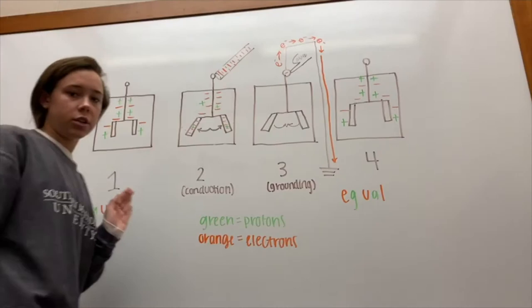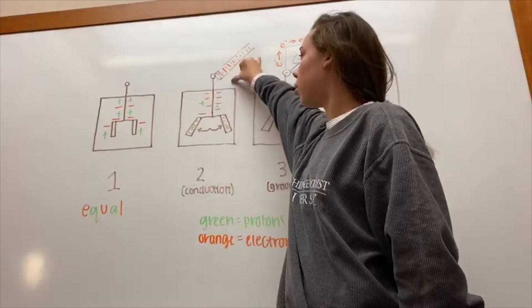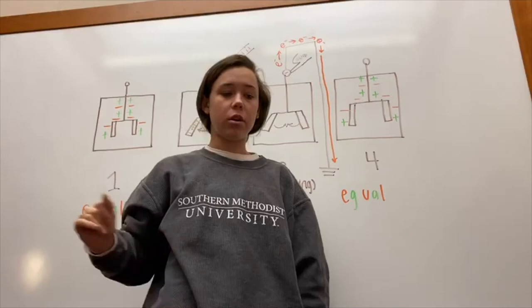This demonstration shows charging by conduction. In order to have charging by conduction, there must be contact. So in this case, we have contact through the metal pipe through the PVC pipe. In the beginning when you charge the PVC pipe, you're creating charging by friction.